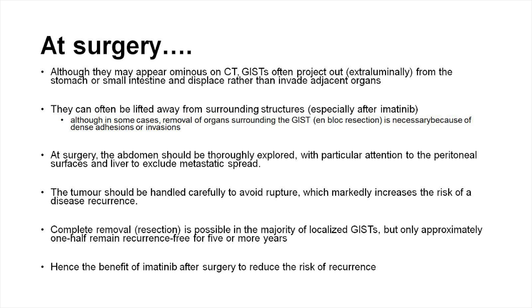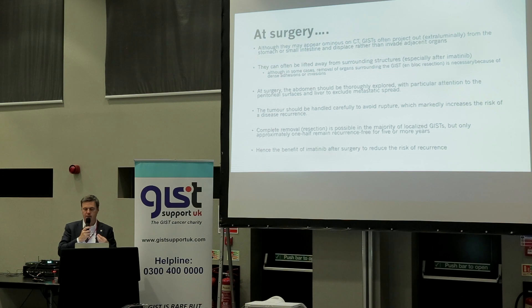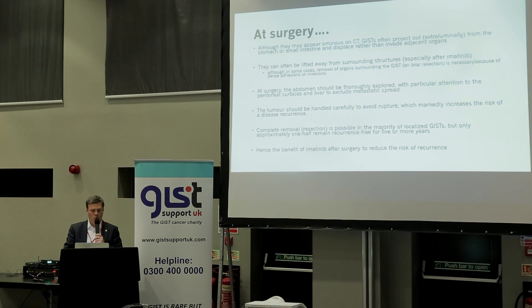You have to handle GISTs very carefully. They can be cystic — full of fluid — and they can rupture. If you have a rupture at the time of surgery, that puts you in a high-risk group. Sometimes GISTs rupture themselves because they grow very large and have a propensity to fistulate or rupture, but you certainly don't want to rupture a GIST at the time of surgery. It is possible to take out almost all GISTs, and the real benefit of imatinib is that it shrinks the tumour and reduces the risk of recurrence.